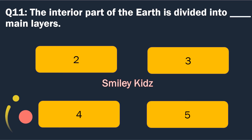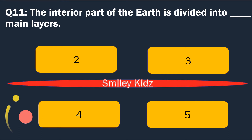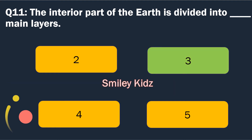Question number 11. The interior part of the earth is divided into blank main layers. Options are: 2, 3, 4 and 5. The right answer is 3. The interior part of the earth is divided into 3 main layers.